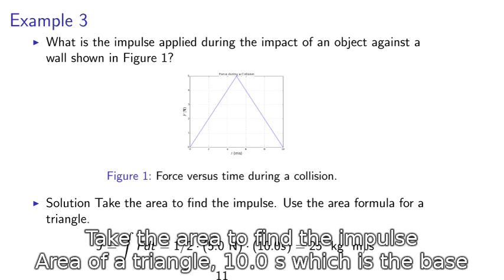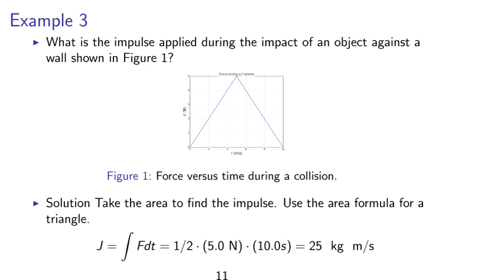Solution. We take the area to find the impulse. Use the area formula for a triangle. The integral is simply the area, which is half times 5 newtons, which is the peak, times 10 seconds, which is the base, which will obtain 25 kilogram meters per second.